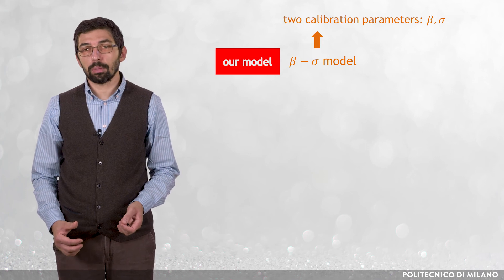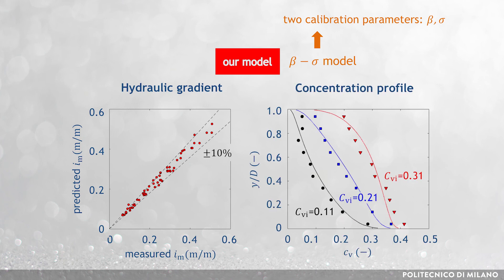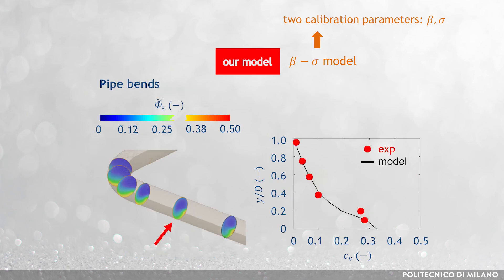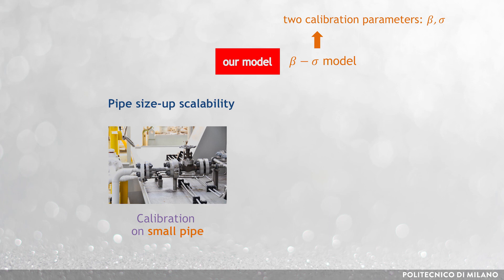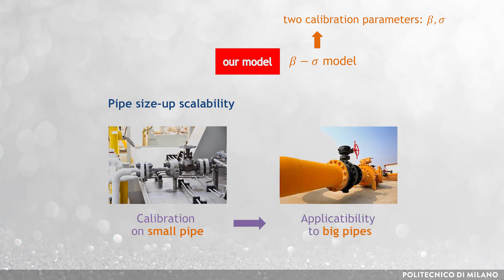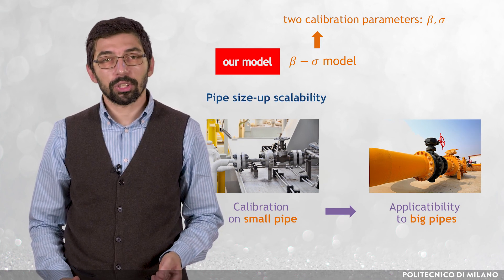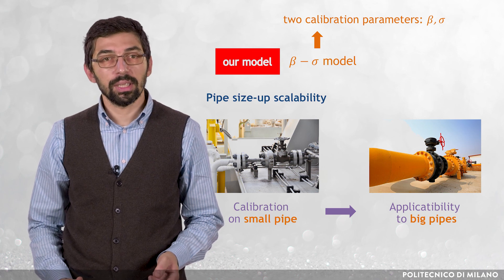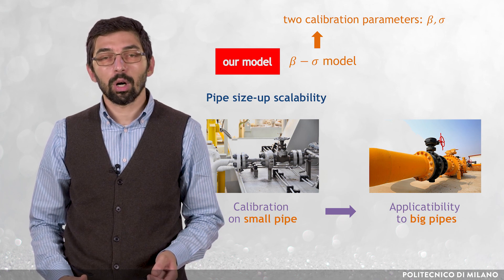Provided that beta and sigma are properly set, the beta-sigma model allows accurate prediction of hydraulic gradient and vertical concentration profile of slurry pipe flows in the pseudo-homogeneous regime, and it was also successfully applied to pipe bend flows. Very importantly, it also showed good pipe size-up scalability — once beta and sigma have been calibrated with respect to a small pipe in a laboratory circuit, the same set of values can be used to simulate the flow of the same slurry in bigger pipes. In summary, the beta-sigma model seems to have the potential to be a useful predictive tool for engineers and designers, and research efforts are currently devoted to overcoming the limiting assumption of a fully suspended flow.